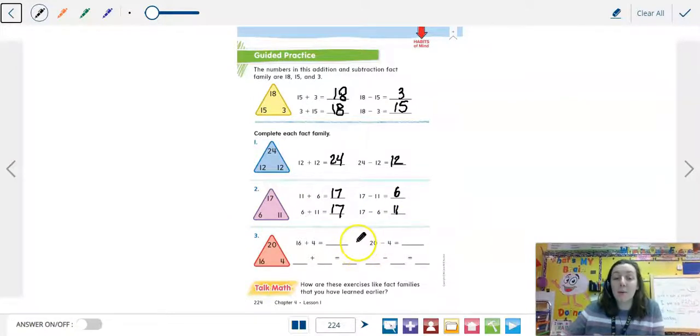Okay, this should be really familiar for you because we've worked through this with fact families before. Same thing. 16 plus 4 is our whole, which is 20. 20 minus 4 is 16.